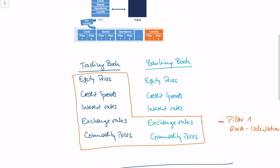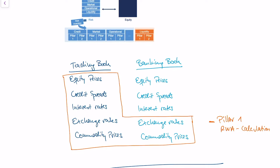In the video on market risk in banks, we said that all assets in the trading book, and the risk factors exchange rates and commodity prices, are managed by calculating risk-weighted assets. We can calculate risk-weighted assets using a formula given by banking regulation, and we obtain a risk-weighted assets measure which tells us how much equity we need to cover the risk.